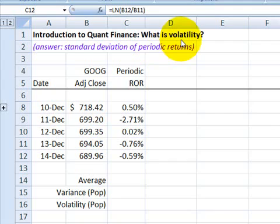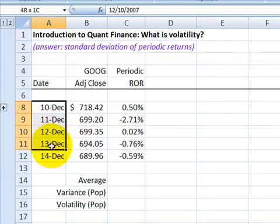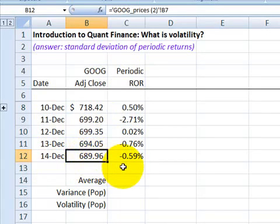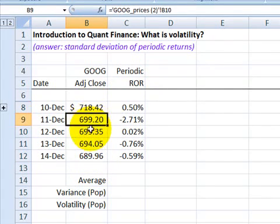I'm going to continue from yesterday's brief discussion where I showed you how to calculate the periodic rate of return. In this case, I pulled recent stock price closes for Google, so this is five days, this is last week. Here's December 14th, Friday, Google closed at $689.96. So a very small sample, five daily stock price closes.